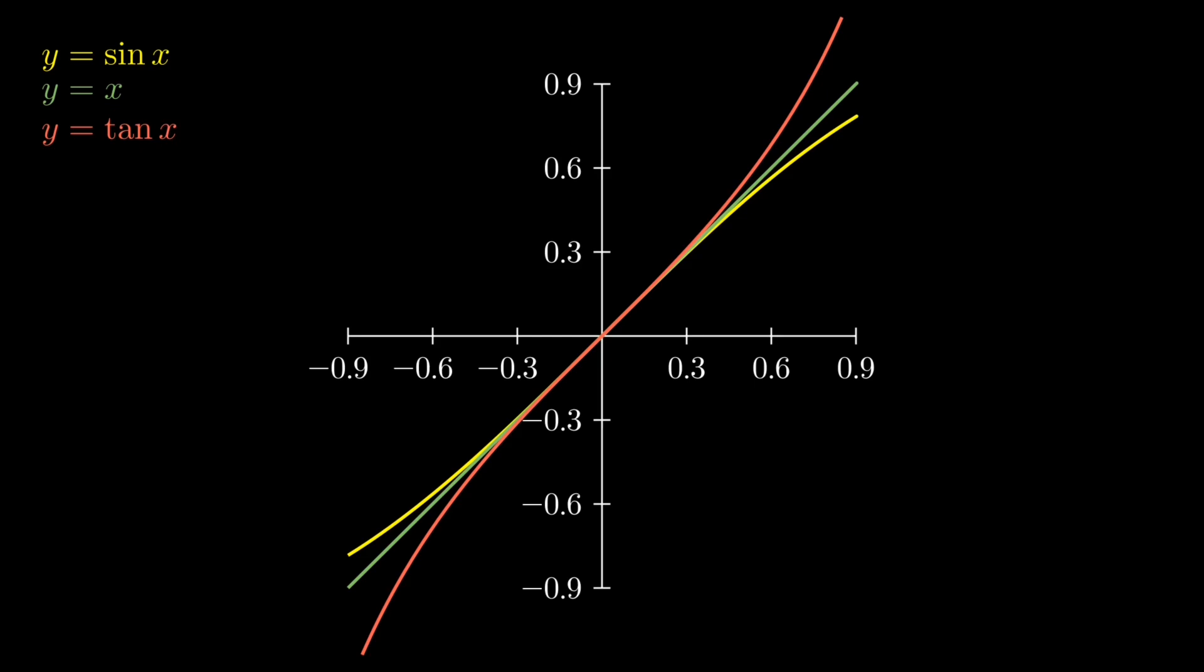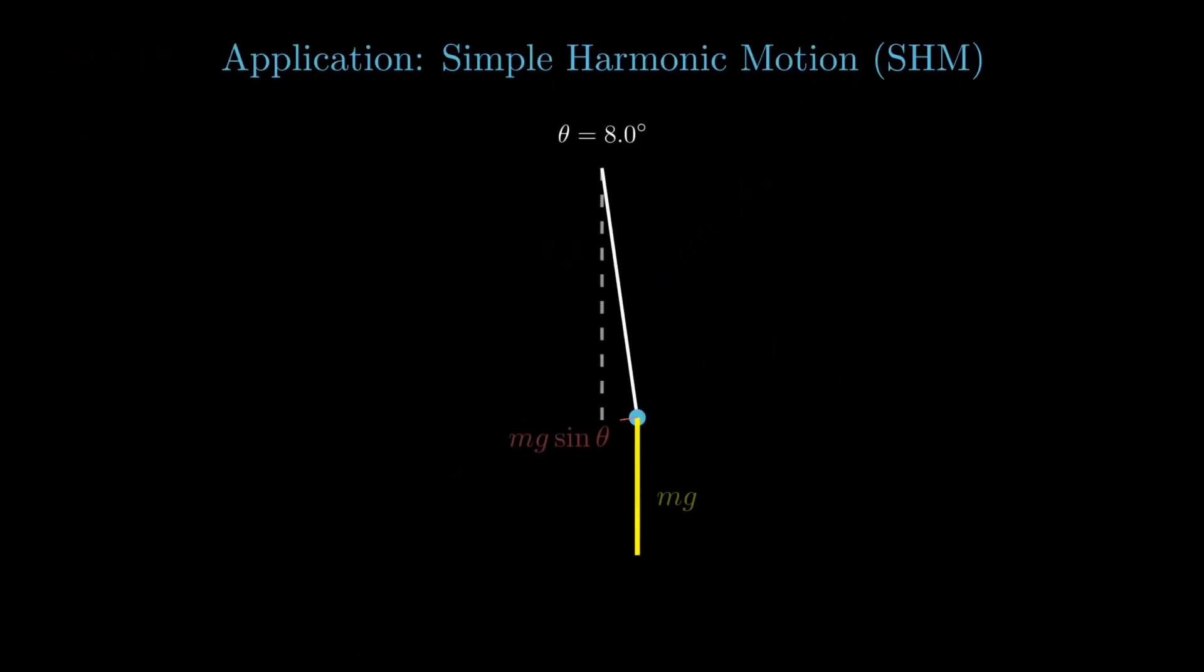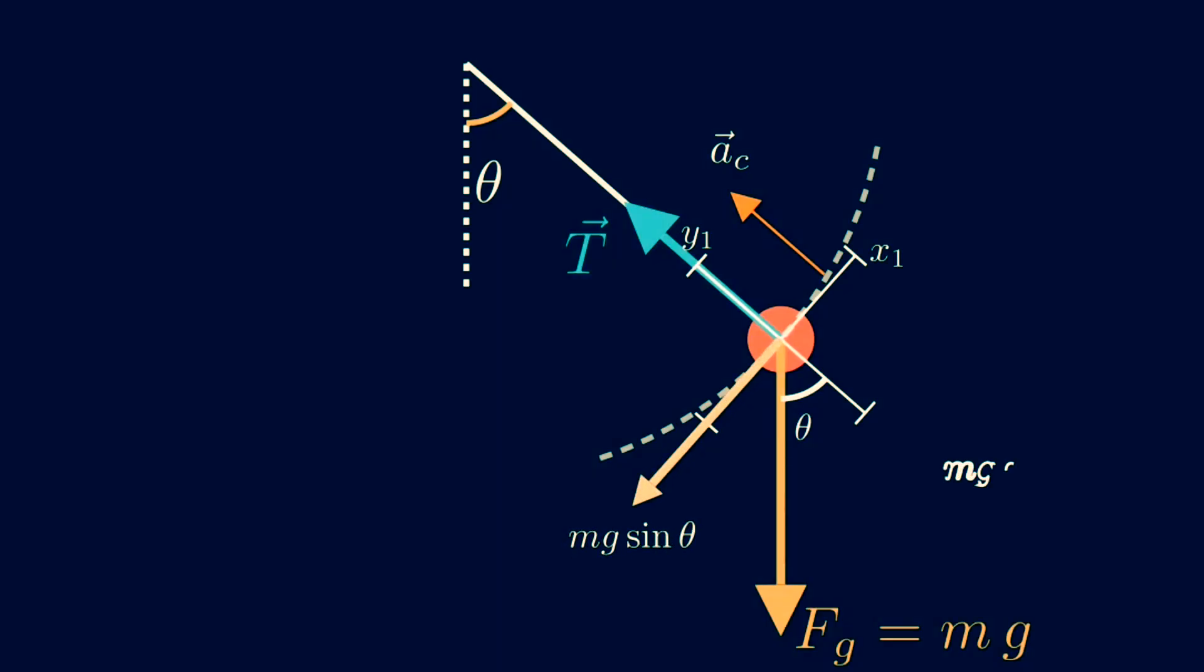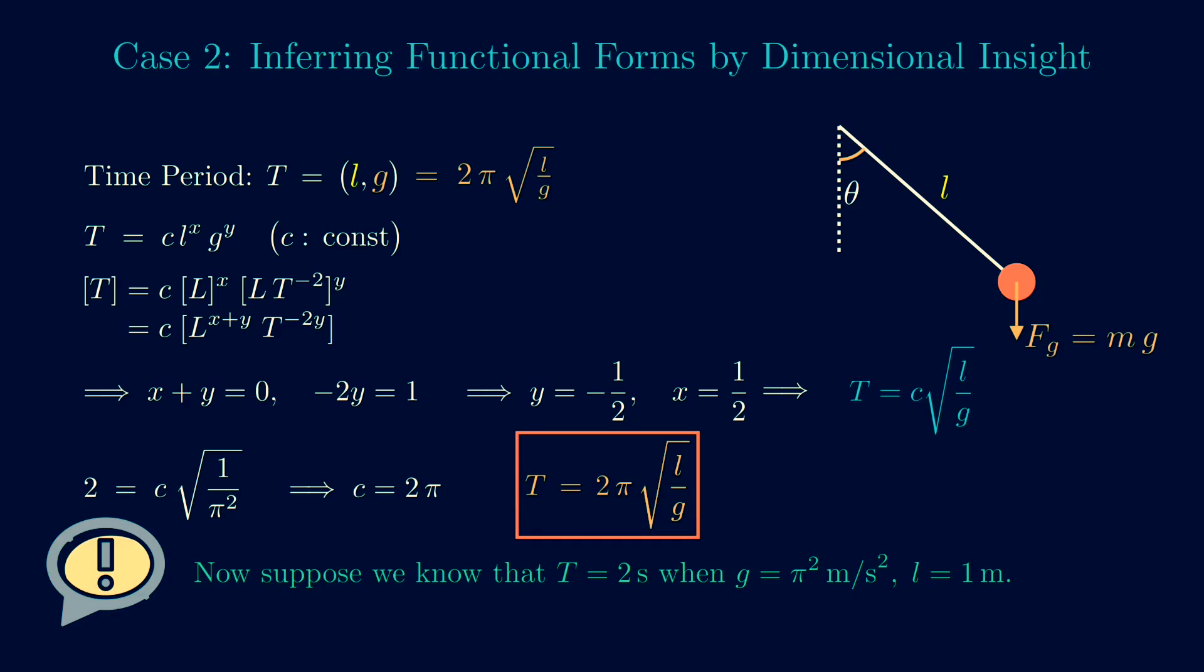Now, when exactly do we use the small angle approximation? A few applications might clarify that better. First, consider a pendulum. We've already seen its motion and even calculated its time period while studying units and dimensions as well as vectors previously. But back then, we allowed fairly large swings. Now let's understand what happens when the pendulum swings through a very small angle, typically less than around 10 degrees.